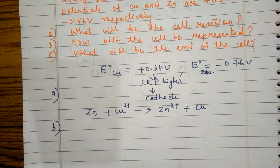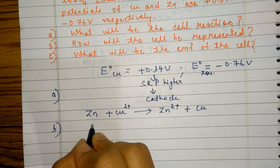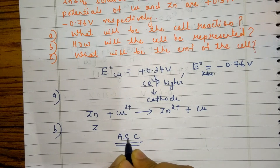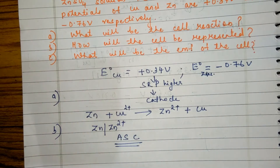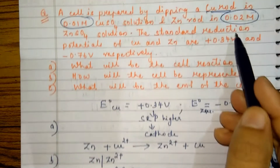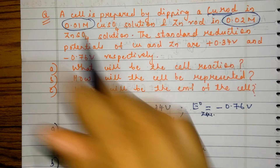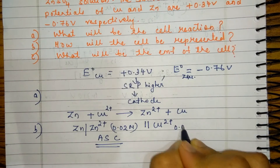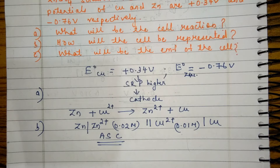The second part asks for the cell representation. We represent it using the ASC convention: anode | salt bridge | cathode. The anode is zinc, so it is written as Zn | Zn²⁺ (0.02 M) || Cu²⁺ (0.01 M) | Cu. This is the cell representation.